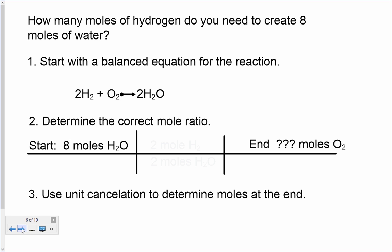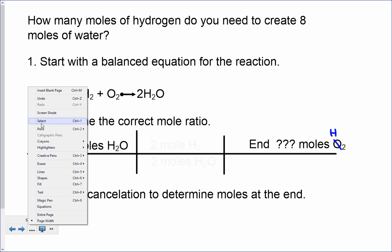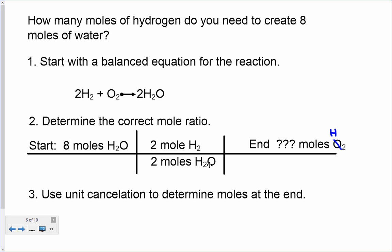Here's a slightly different problem: how many moles of hydrogen do you need to create eight moles of water? We have the same balanced equation and the same starting point, but we're trying to figure out the moles of H₂ we need. We set up our molar ratio again — two moles of water and two moles of hydrogen. Using unit cancellation, the water moles cancel out, and since the ratio is one-to-one, we end up with eight moles of hydrogen.